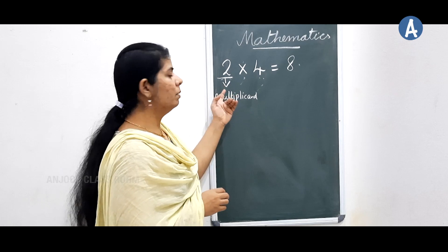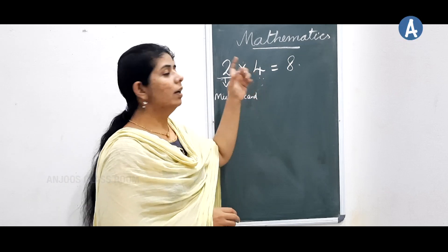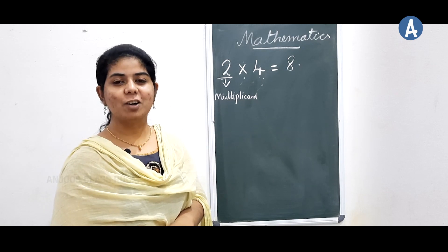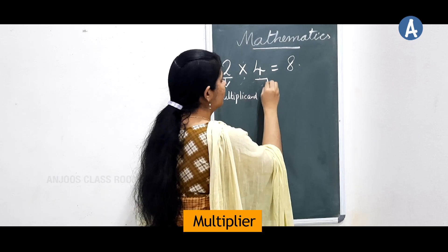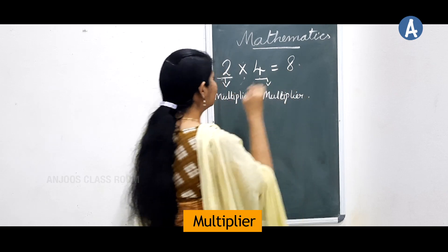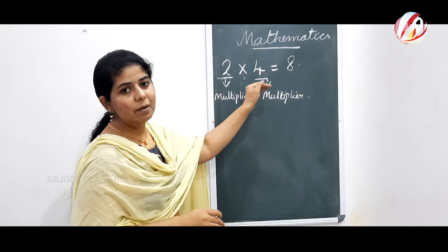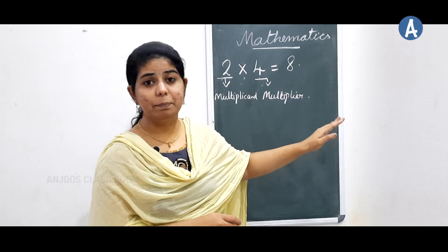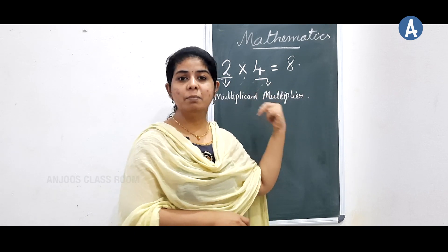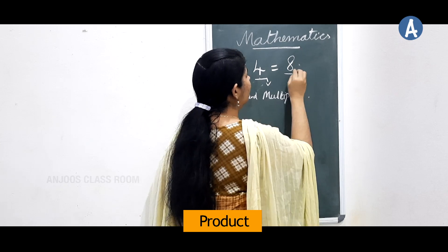Now, the number with which we multiply — that is four — is known as the multiplier. So four is called the multiplier. The first number we have to multiply is the multiplicand, and the number we are multiplying by is the multiplier. Then after multiplying those two numbers, we get an answer. That answer is known as the product.